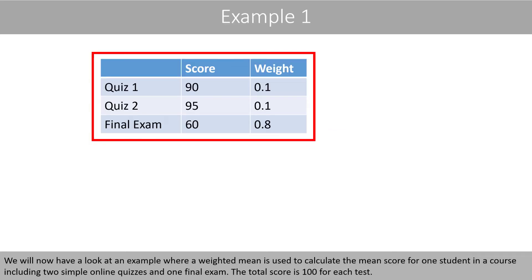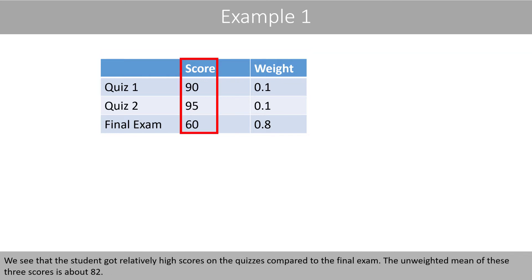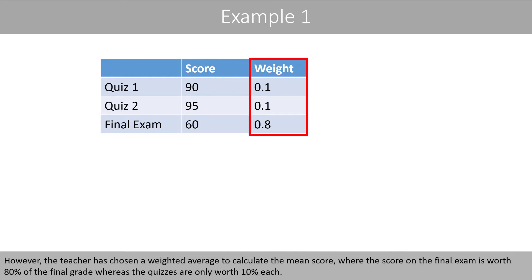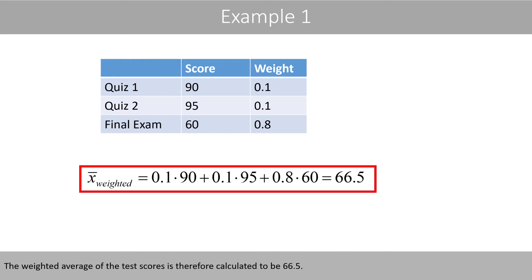We will now look at an example where a weighted mean is used to calculate the mean score for one student in a course including two simple online quizzes and one final exam. The total score is 100 for each test. The student got relatively high scores on the quizzes compared to the final exam. The unweighted mean of these three scores is about 82. However, the teacher uses a weighted average, where the score on the final exam is worth 80% of the final grade, whereas the quizzes are only worth 10% each. The weighted average of the test scores is therefore calculated to be 66.5.